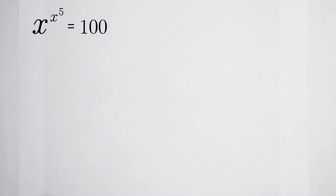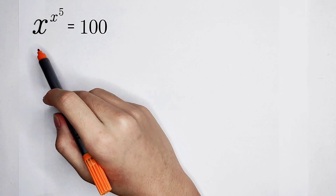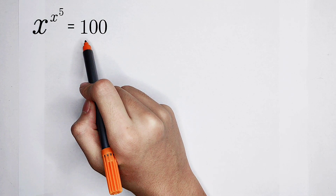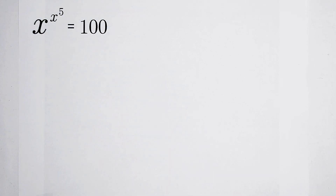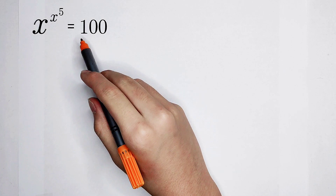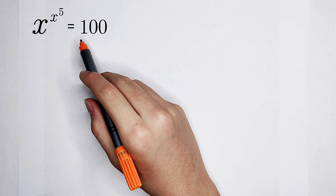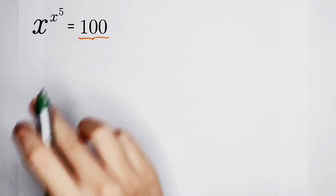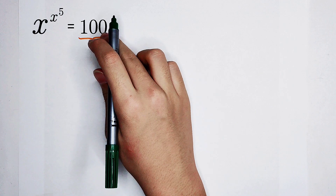Of course, the right-hand side is much more complicated than the left-hand side. The right-hand side is just a number, 100. We only know that 100 is a square number — it is 10 squared. We can try writing this 100 as 10 squared.